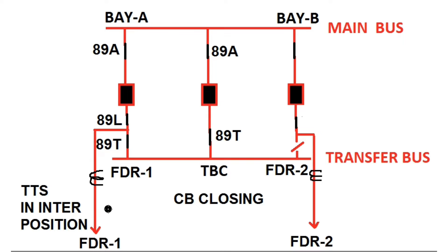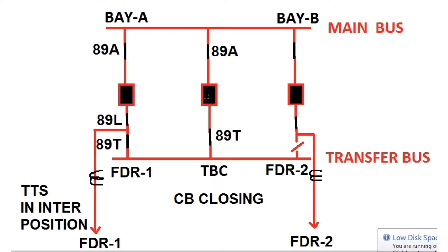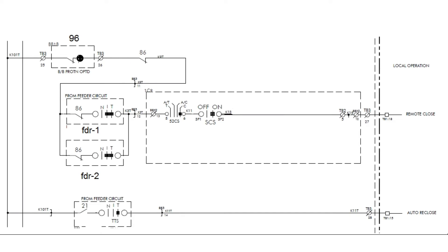Now the TTS switch position can be moved to the transfer position. If any fault arises in this feeder, the relay will sense this fault and it will transfer the trip through the TBC breaker. Let us now discuss the closing of the TBC breaker. This diagram shows the remote close operation circuit from the TBC — that is the transfer bus coupler breaker.